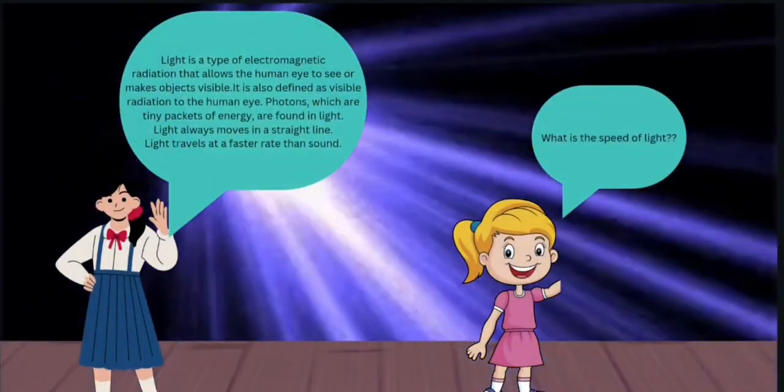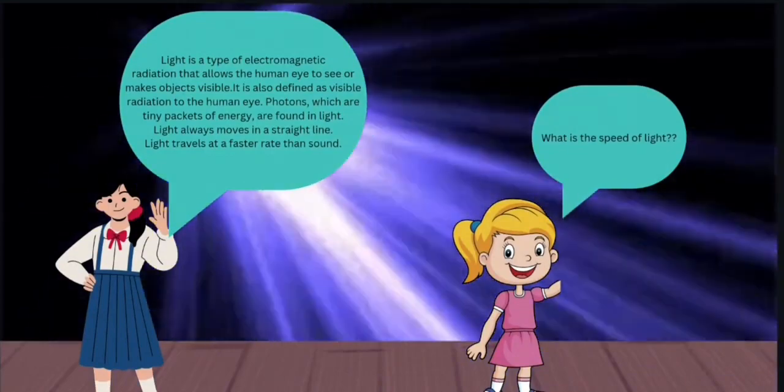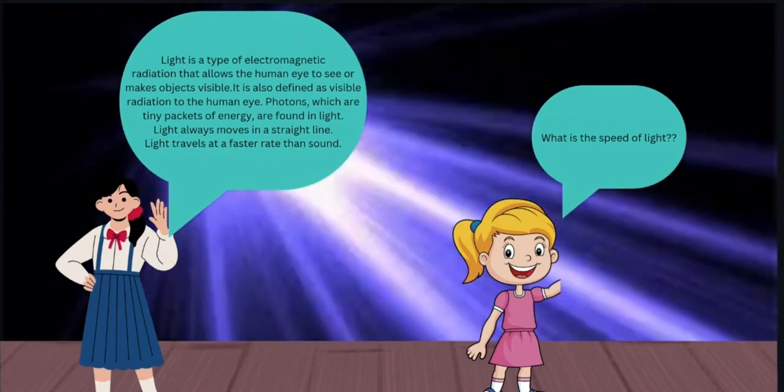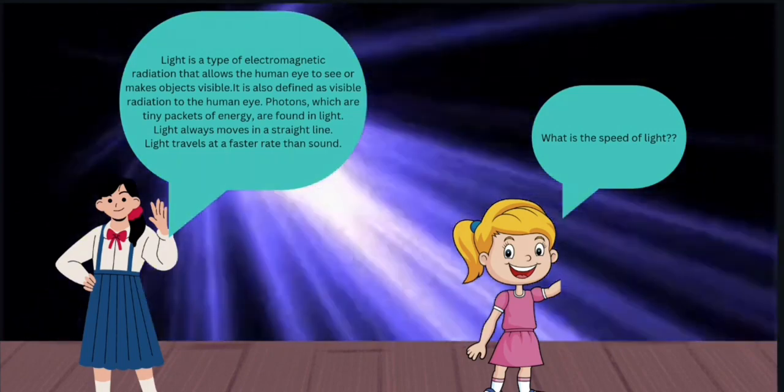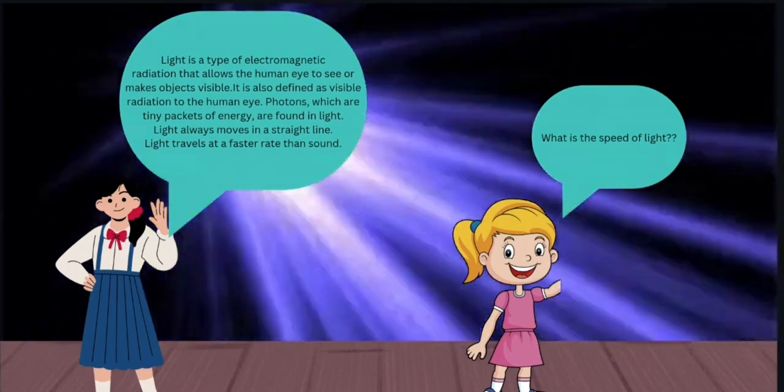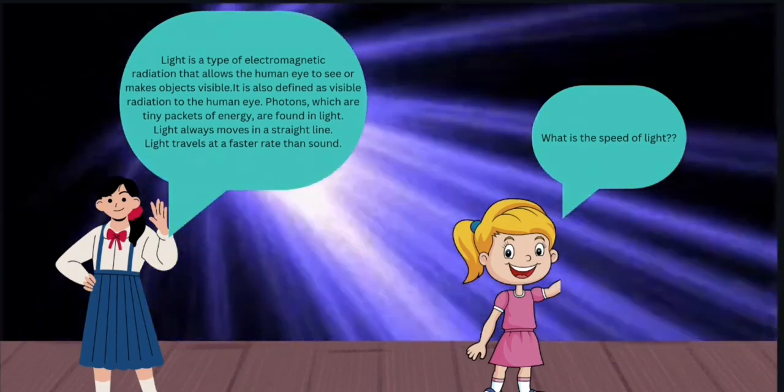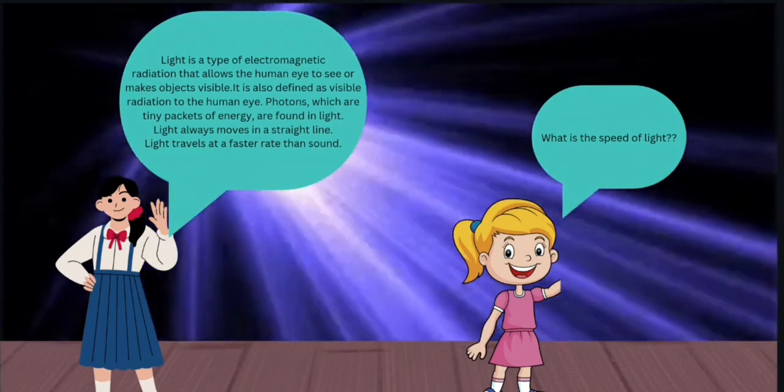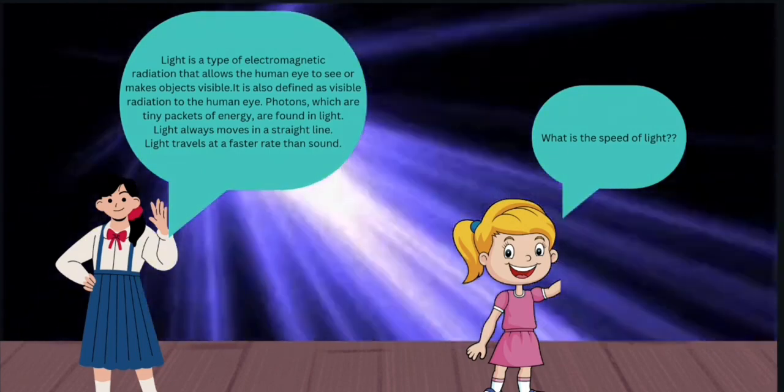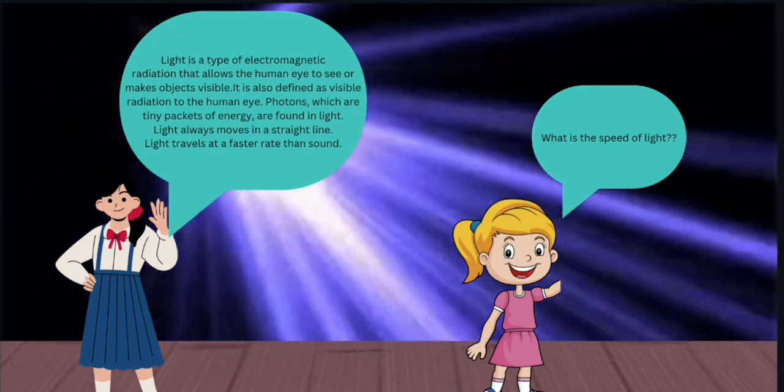Light is a type of electromagnetic radiation that allows the human eye to see or make objects visible. This is also defined as visible radiation to the human eye. Photons, which are tiny packets of energy, are produced in light. Light always moves in a straight line. Light travels at a faster rate than sound.